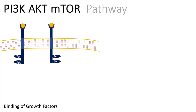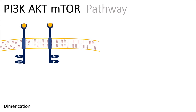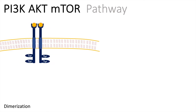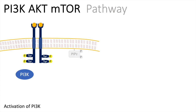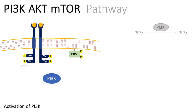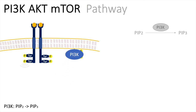The growth factors will bind to our ligand binding sites. This leads to dimerization, so the receptors form a dimer and one receptor will phosphorylate the tyrosine residue on the other one. This transphosphorylation now allows for the docking of proteins, and one of these proteins which gets activated by the tyrosine kinase is PI3K. The purpose of PI3 kinase is to transform PIP2, which is a membrane protein binding two phosphates, into PIP3.